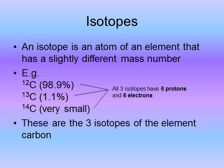Many elements have several isotopes with varying abundance. Carbon has three isotopes, with carbon-12 being the major one. Chlorine has two isotopes in roughly equal proportions, while lead has four stable isotopes. Some elements, such as uranium, have radioactive isotopes that are unstable and break up, with half-lives ranging from milliseconds to thousands of years.